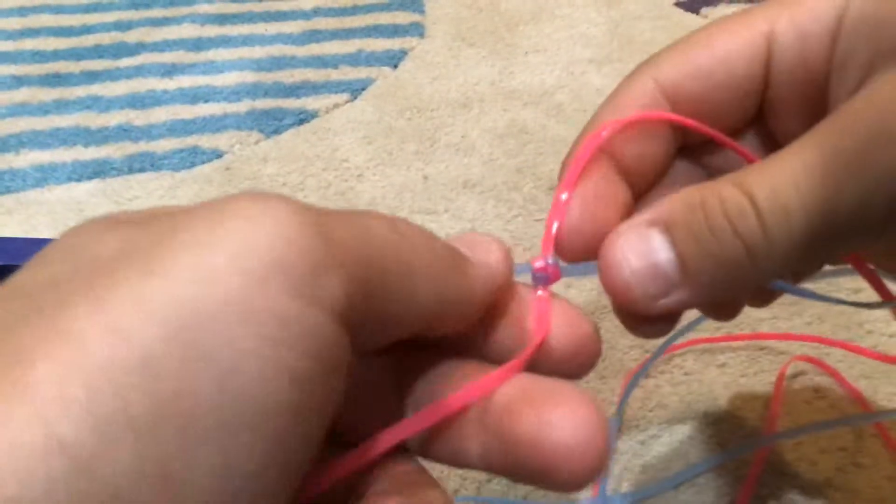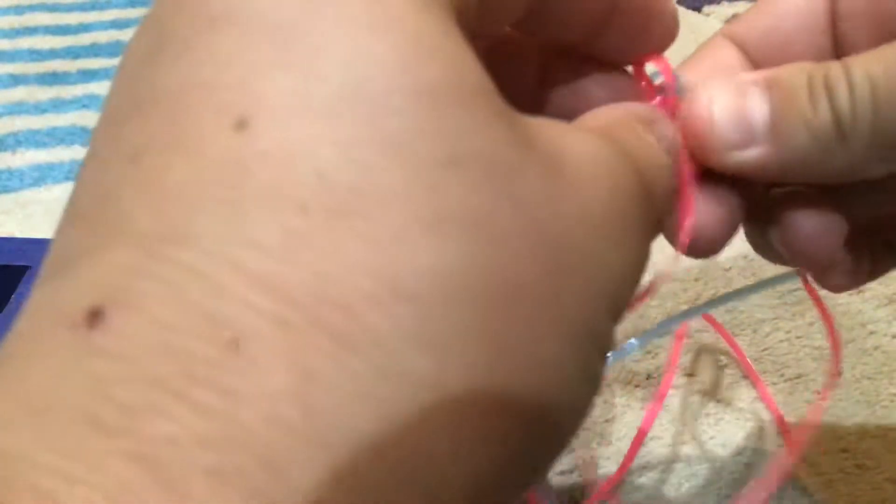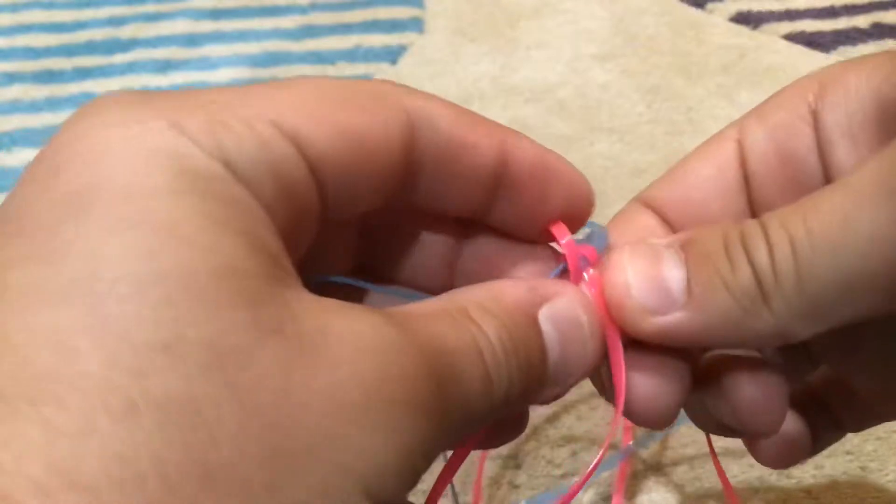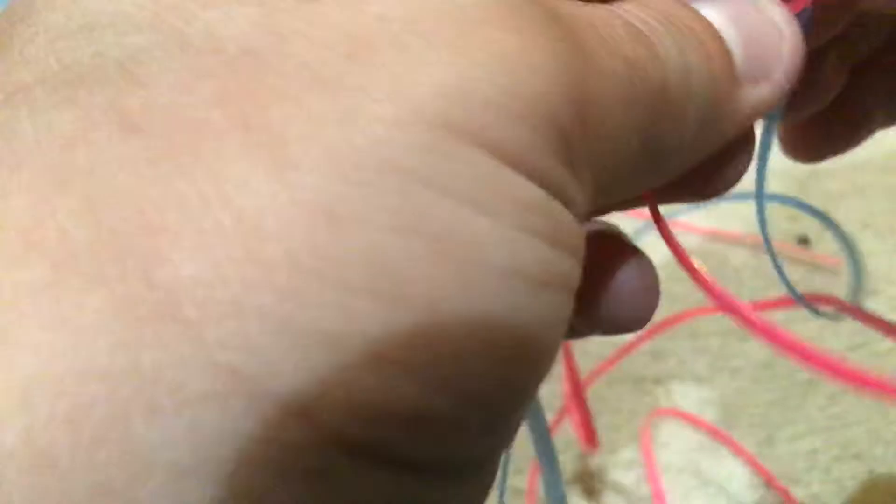Then take a color, it doesn't matter, loop it over to this side like the blue is like that. And then get the second color and loop it over to that side like that.